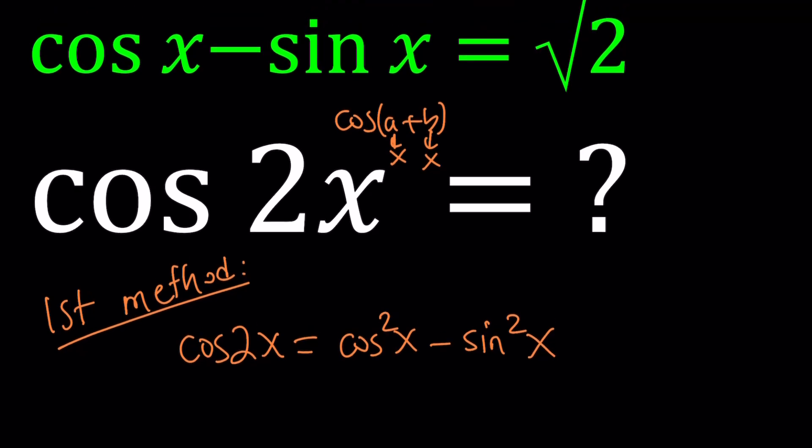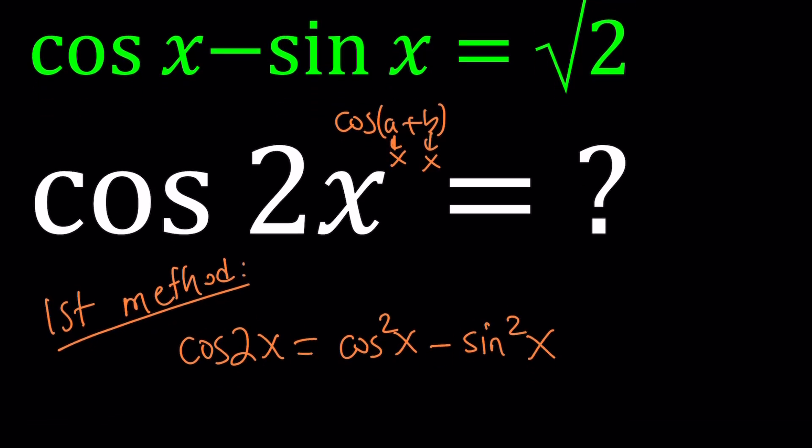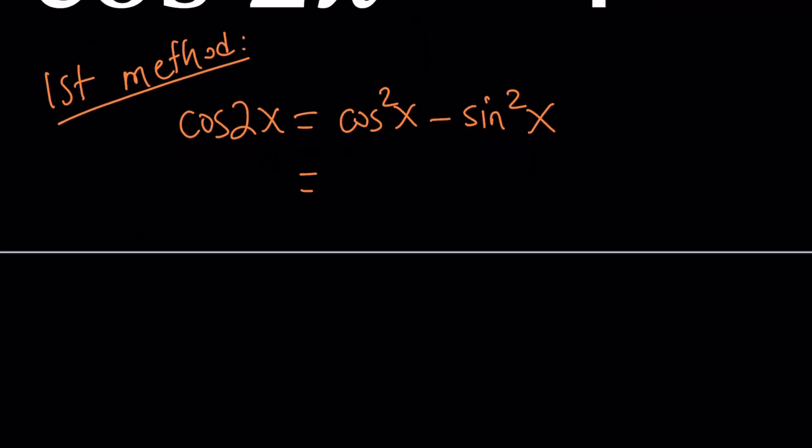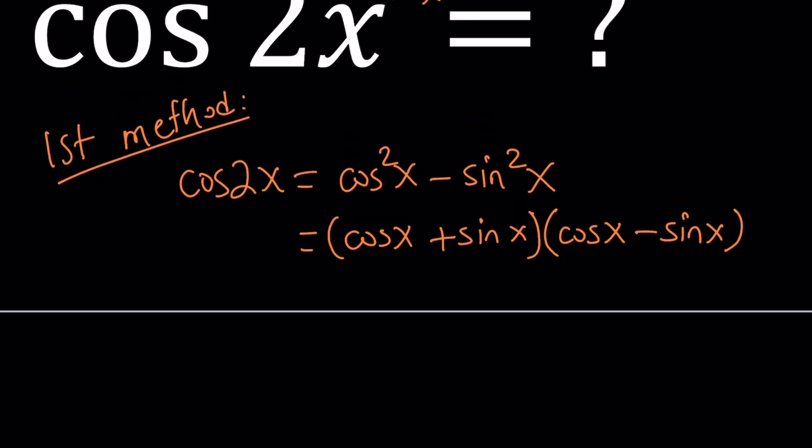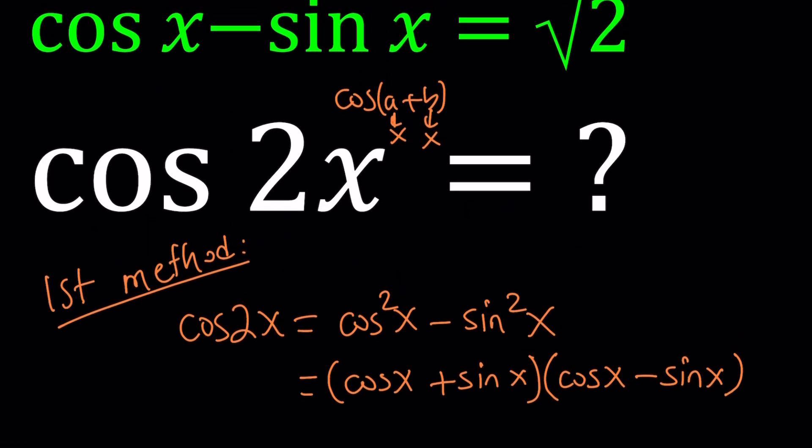Now, notice that we were given cosine x minus sine x. How does that help? Well, cosine squared minus sine squared is a difference of two squares, isn't it? So we can factor it. Let's write this as cosine x plus sine x multiplied by cosine x minus sine x. I've probably told you at several points that difference of two squares is one of the most important identities in math. Very important. So what do I do with this? Well, I kind of have half the answer. I know cosine x minus sine x, but I just don't know cosine x plus sine x. But that's easy to get.